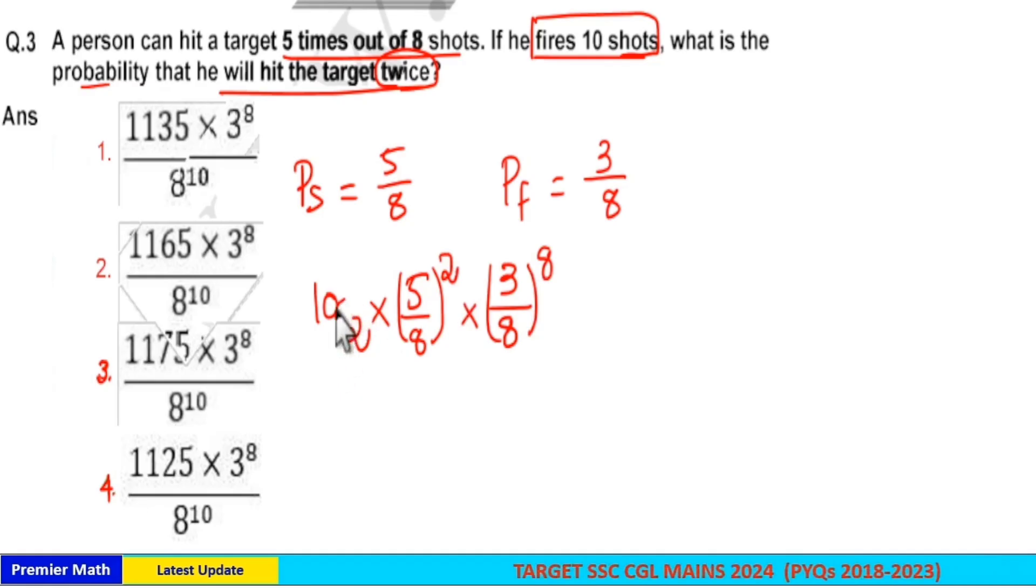Total 2 plus 8 is 10 times. So 5 by 8 the whole square, you hit the target twice. So this is the chance of success. And 3 by 8 the whole raised to 8 is the chances of failure.